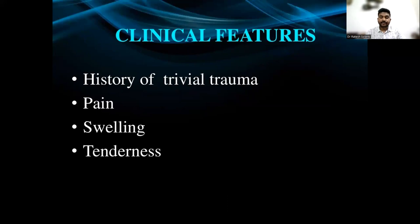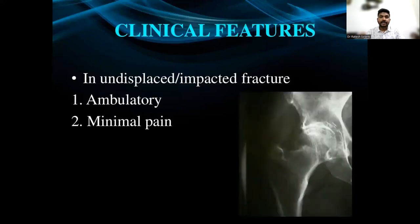What are the clinical features? There will be a history of trivial trauma. The patient will typically complain of pain and swelling over the groin and hip region. There will be tenderness on examination. The patient will not be able to walk on the affected limb and will not be able to perform the straight leg raising test. However, if the fracture is undisplaced or impacted, the patient can walk and will be ambulatory with minimal pain. In such cases, you must be suspicious about a fracture neck of femur.